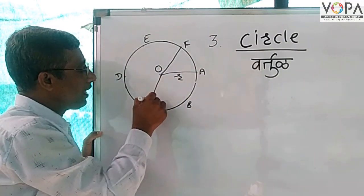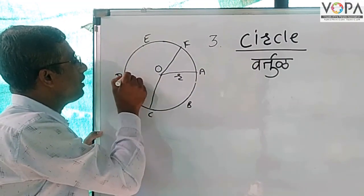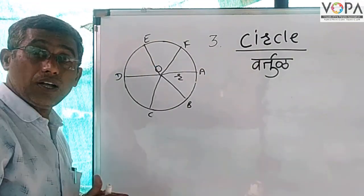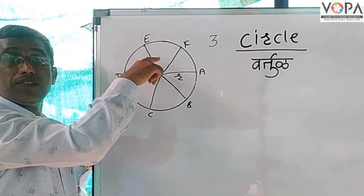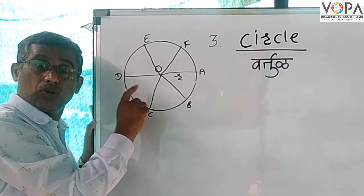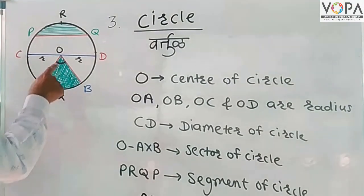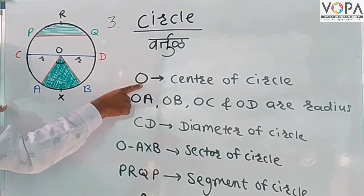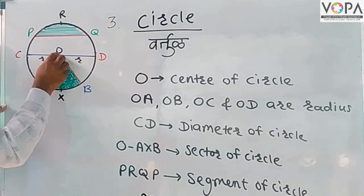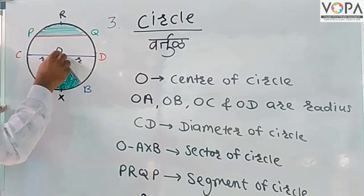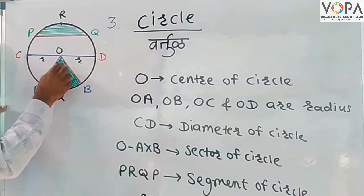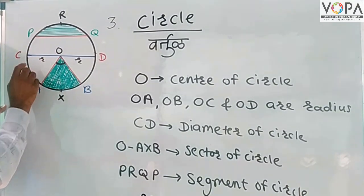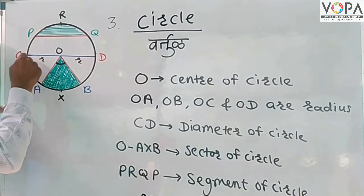OA, OB, and OC are all radii of the circle, and all radii of a circle are congruent. O is the center of the circle, and OA, OB, OC, OD are all radii of the circle.